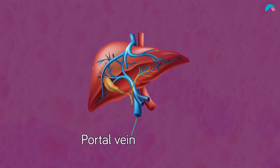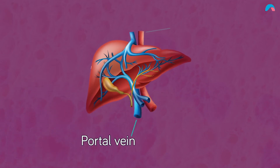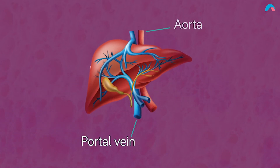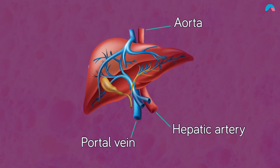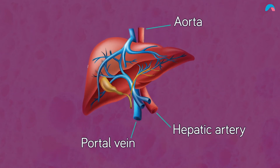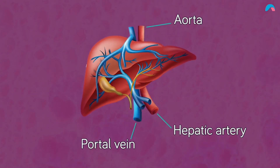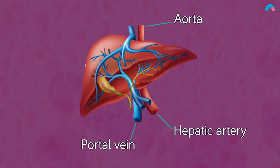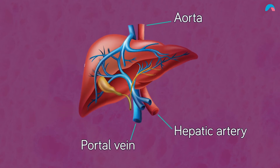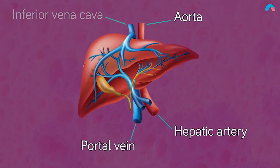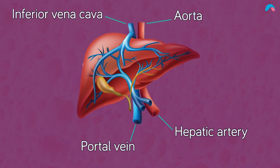The main arterial blood supply comes from a branch of the aorta known as the hepatic artery, which delivers oxygen-rich blood. Blood from the liver drains into the hepatic vein, which empties into the inferior vena cava.